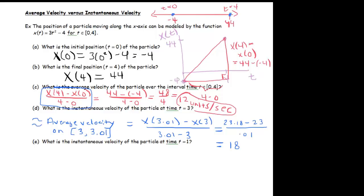So 18 is my instantaneous velocity. So notice what I did was kind of a trick. I used the slope of the secant line, but I just made the interval really, really small so that I'm approximating the best that I can the instantaneous velocity.